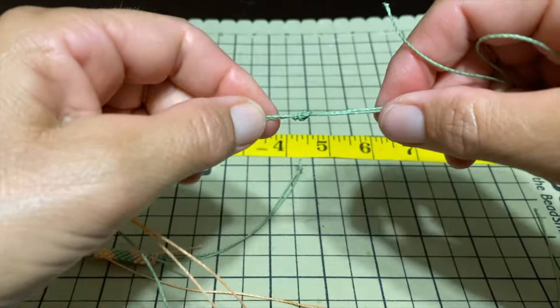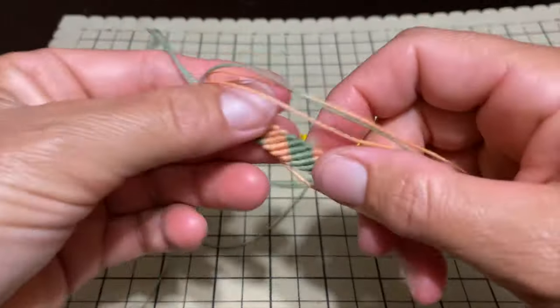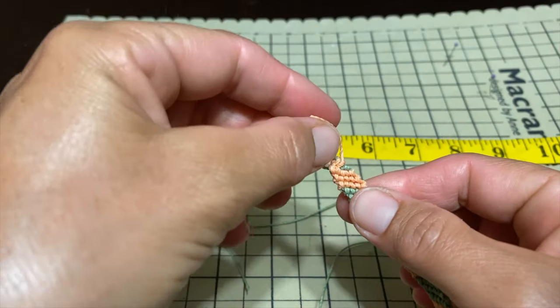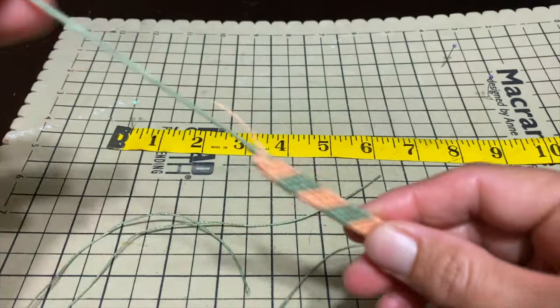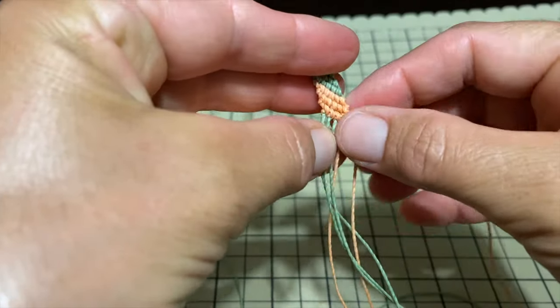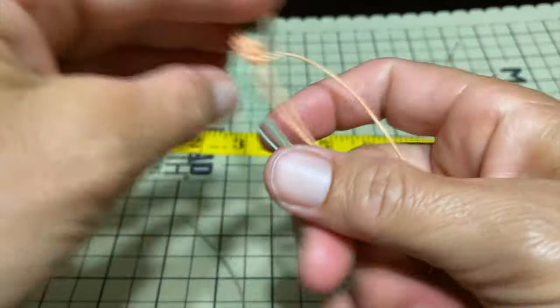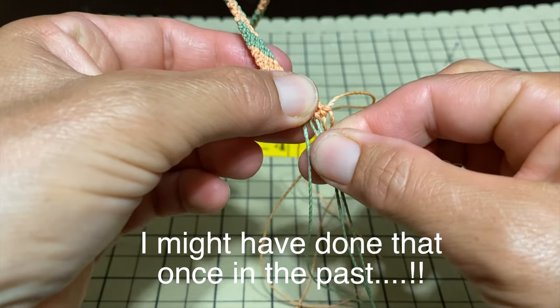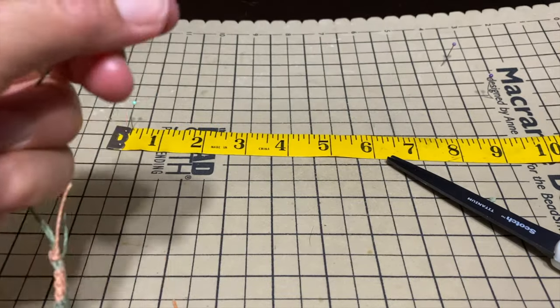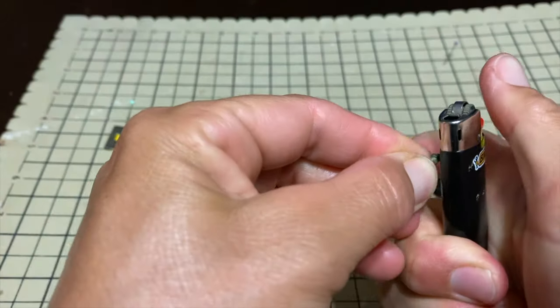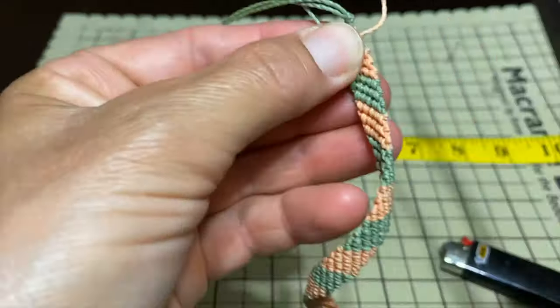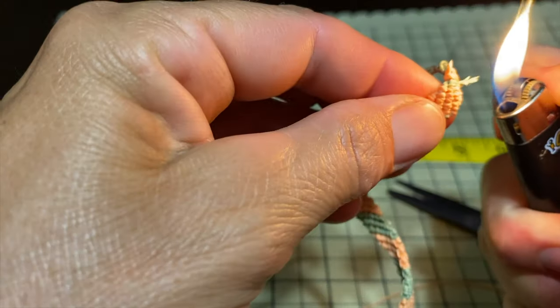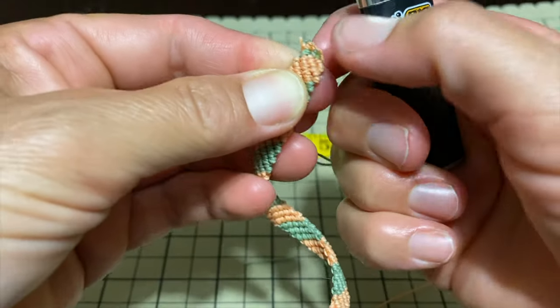Now we need to do some cutting and burning. We're going to cut everything that's unnecessary, these two, cut and burn. Cut over here and burn the end. And over here, we'll cut these and over here. When you burn the excess strings, make sure you don't burn your strings that you're keeping. Also, be careful not to burn yourself. I use the side of the lighter to smooth out that burnt piece.